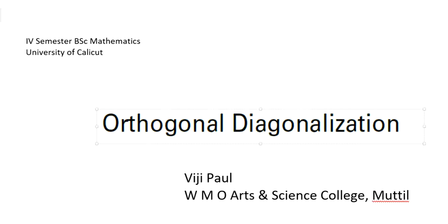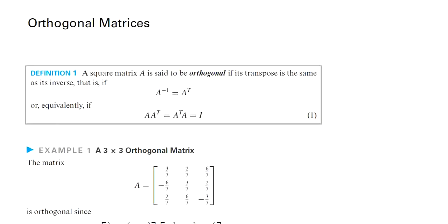Dear students, today we discuss orthogonal diagonalization. We start with the definition of an orthogonal matrix. A matrix is said to be orthogonal if A inverse equals A transpose — that is, the inverse of the matrix is the same as its transpose. Equivalently, A times A transpose must equal A transpose times A, which is the identity matrix of the same order.